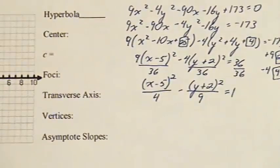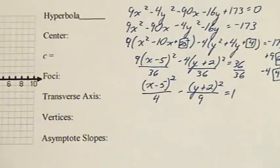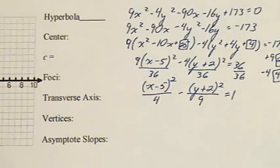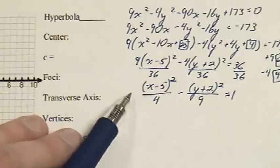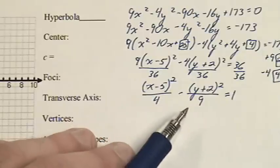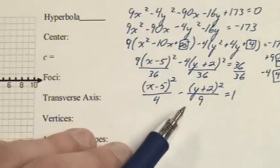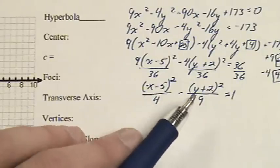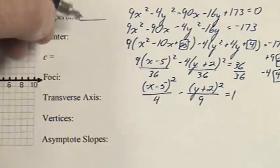We're going to take this hyperbola that has been converted into standard form and find all of the information required for graphing. We have x minus 5 squared over 4 minus y plus 2 squared over 9 equals 1. The center can be found at 5 comma negative 2.